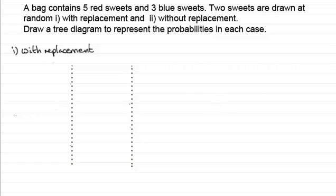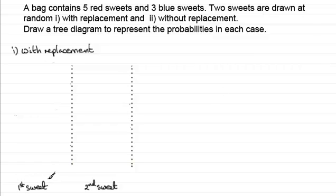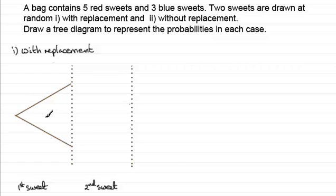The first section is going to be all about drawing our first sweet — what kind of sweet it's going to be. And in the second section, we're going to have the second sweet. What can happen when we take our first sweet? We can either get a red sweet or a blue sweet — two outcomes. We illustrate that by drawing two lines. If there was a third sweet, like a yellow sweet, I'd draw three lines.